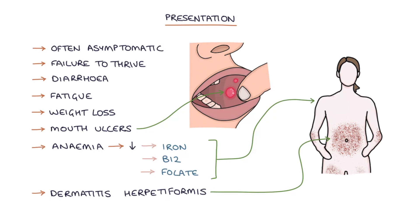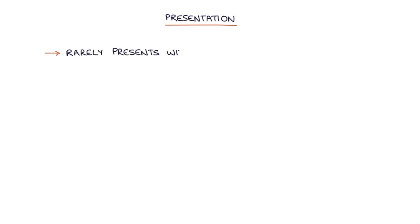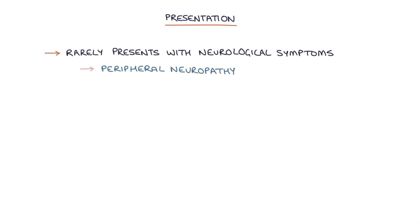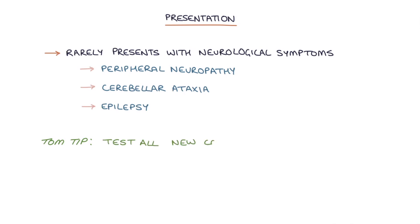Think about celiac disease with a rash like dermatitis herpetiformis. Rarely, celiac disease can present with neurological symptoms like peripheral neuropathy, cerebellar ataxia, and epilepsy. A quick Tom tip: remember that we test all new cases of type 1 diabetes for celiac disease even if they don't have symptoms, because the conditions are often linked.